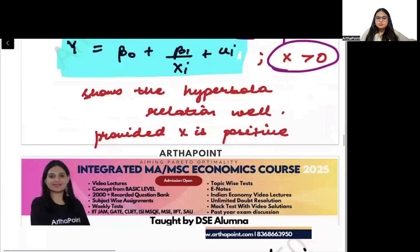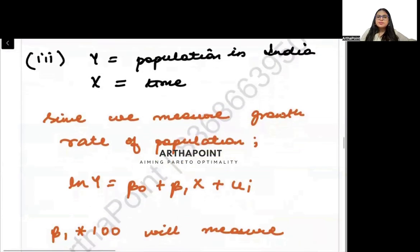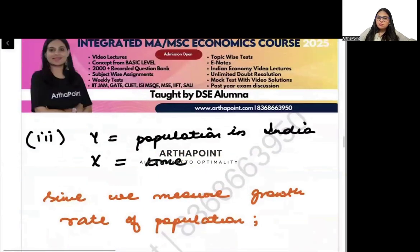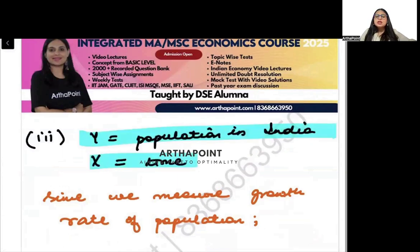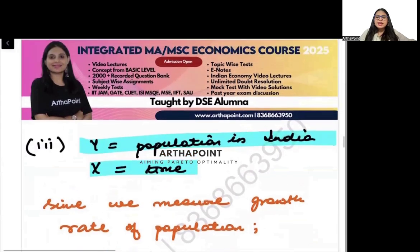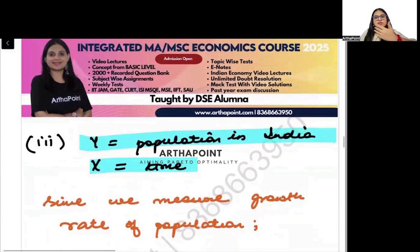Looking to the third one, it says Y is population in India and X is the time. Now try to understand this thing: that population is always told in terms of growth rate.